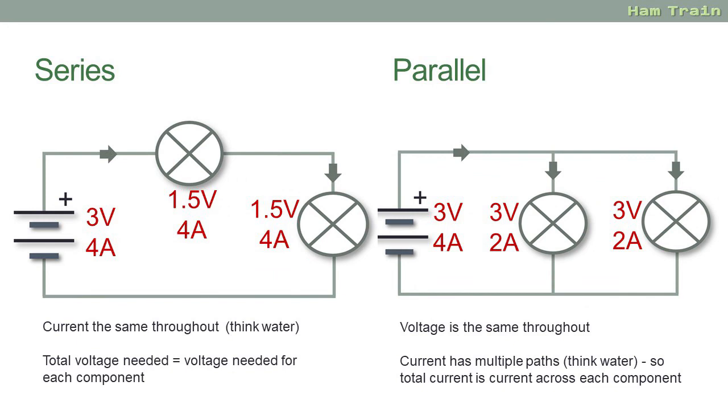Just to close though, I'll put these series and parallel circuits next to each other. So on the left we have the series circuit. Assuming here a 3 volt battery and 4 amps for the circuit. Through the first lamp the voltage is halved and the current remains the same. It goes to the second lamp, again voltage half, current stays the same. Think of it like water - there's only one path, so the current will be constant. And the total voltage needed for the circuit is the voltage needed for each component. In this case 1.5 plus 1.5 equals 3.